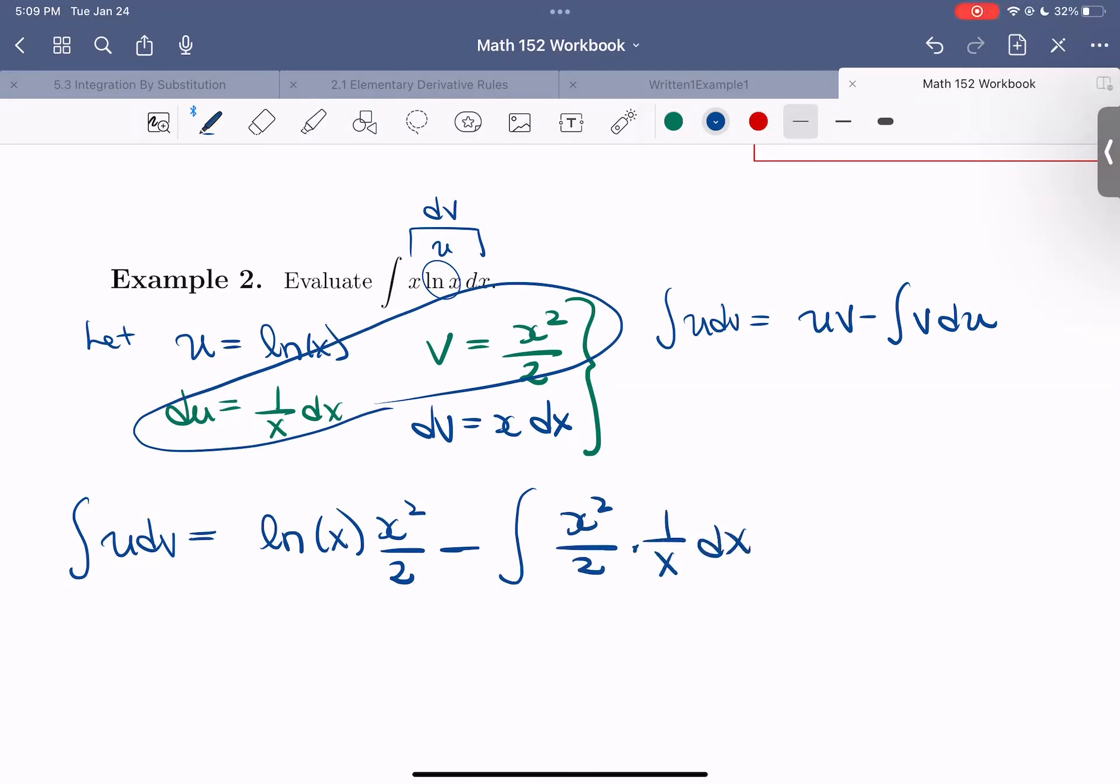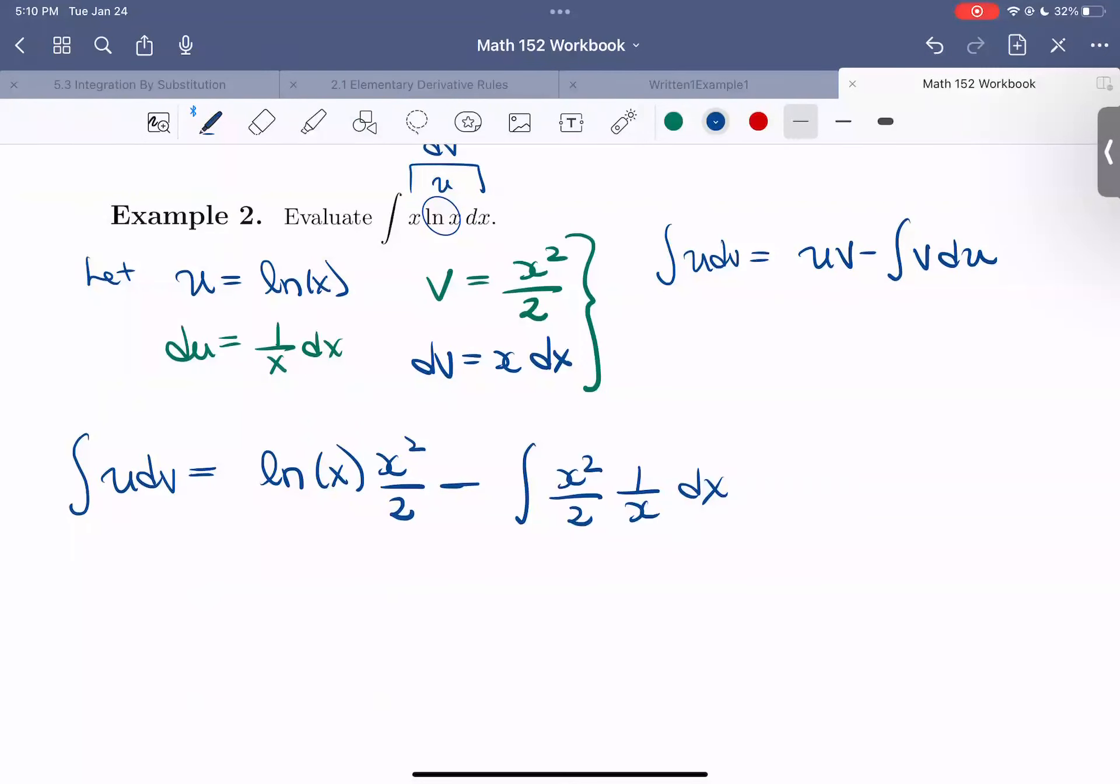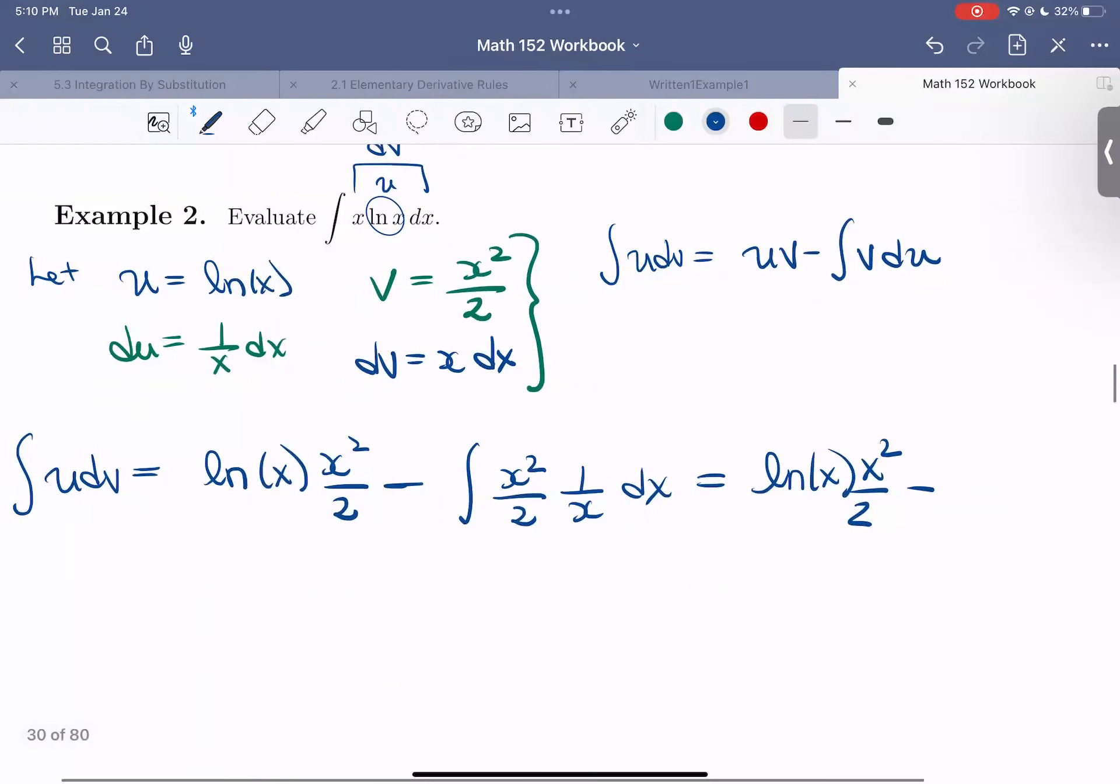All right, this is looking pretty good. All right, so now let's clean up and simplify before we take that anti-derivative. So we have ln of x, x squared over 2 minus, so I get one of my x's to cancel with my x in the denominator. And I can bring that one half out. So I have one half the integral of x dx.